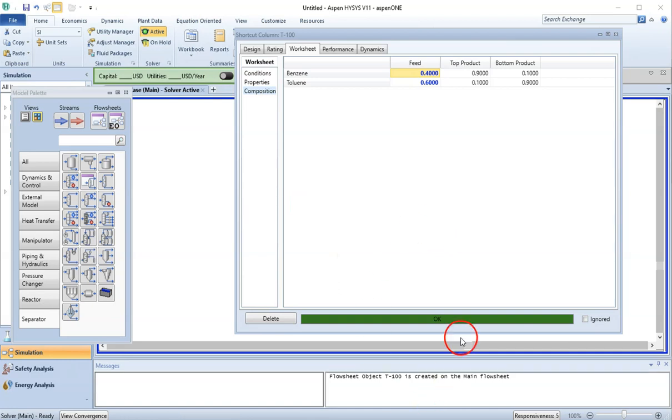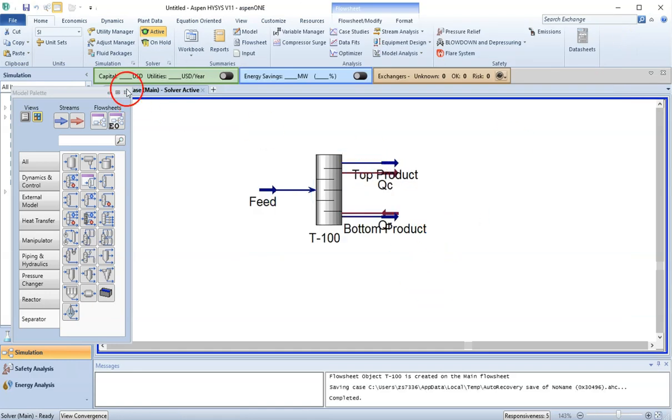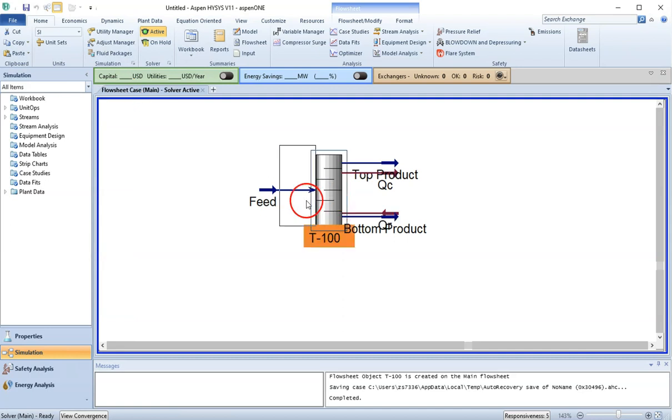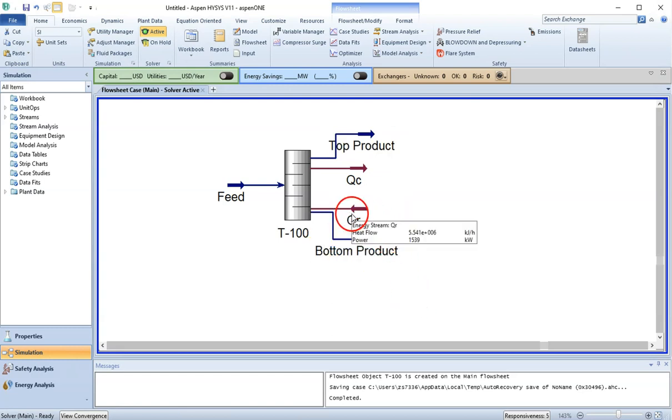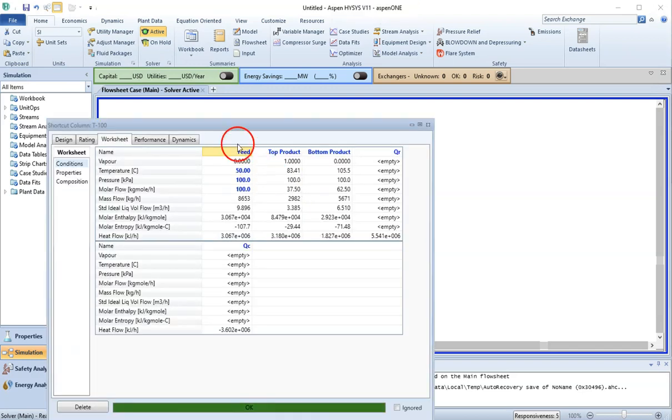As you can see, I have the green signal from HYSYS. This means my system has converged. Let me show you. This is our system here. This is my column, this is my top product, and this is my bottom product. This is the energy required for the reboiler, and this is the release of energy from the condenser. So let us look at analysis here.